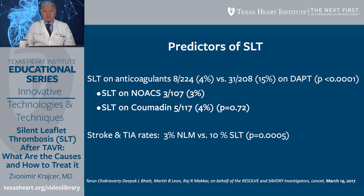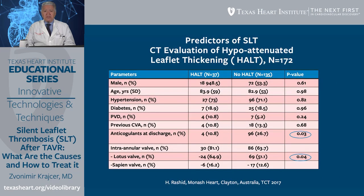Another study from Rashid presented at TCT in 2017 looked at predictors of hypoattenuated leaflet thickening or HALT. Anticoagulants at discharge were the most reliable predictor, meaning patients who did not receive anticoagulants had a higher incidence of thrombosis.